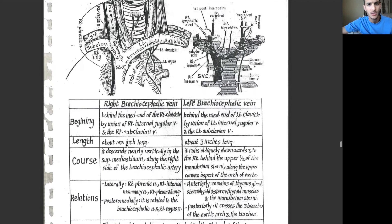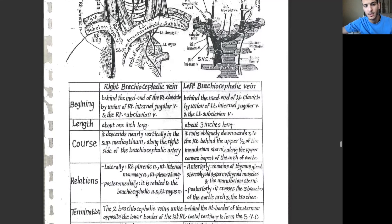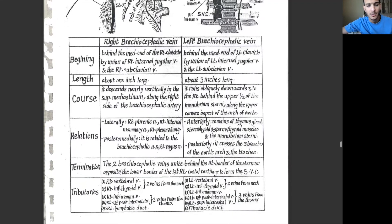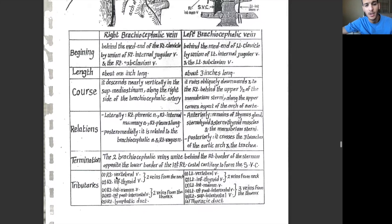The right lung is present laterally to the right brachiocephalic vein, and posterior-medially you have the brachiocephalic artery and the right vagus nerve. The two veins — right and left — unite behind the right border of the sternum, opposite to the lower end of the first right costal cartilage, to form the superior vena cava. Tributaries of the right brachiocephalic vein include the right vertebral vein, right inferior thyroid vein, right internal mammary vein, right first posterior intercostal vein, and right lymphatic duct.